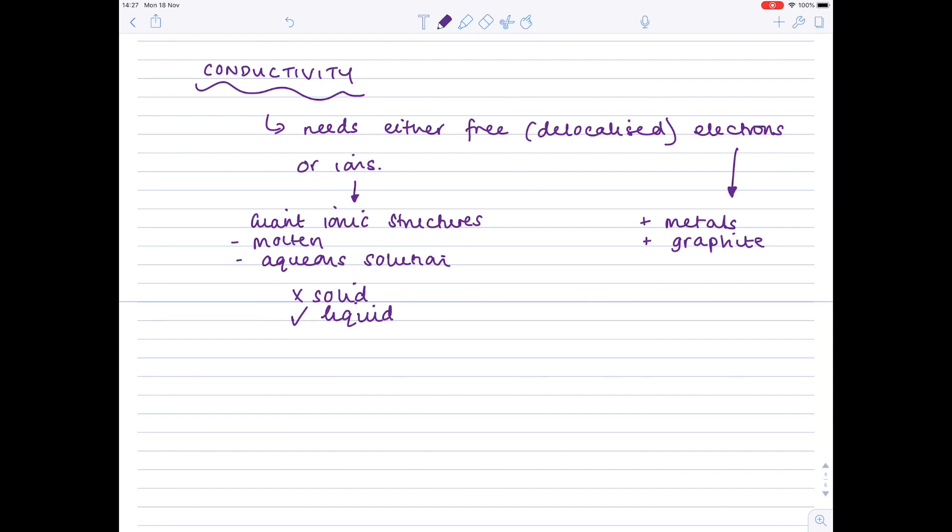My main take-home message here is that when you're looking at ionic substances, it's the ions which carry the charge. When we're looking at metals and graphite, it's electrons which carry the charge. When we have situations where both the electrons or ions are held in fixed positions, then no electrical conductivity occurs.